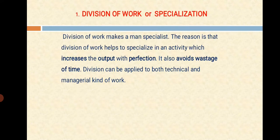The first one is Division of Work or Specialization. Division of Work makes a man specialist. The reason is that division of work helps to specialize in an activity which increases the output with perfection. It also avoids wastage of time. Division can be applied to both technical and managerial kind of work. Henry believed that segregating work in the workforce among the workers will enhance the quality of the product. Similarly, he also concluded that the Division of Work improves the productivity, efficiency, accuracy and speed of the workers. This principle is appropriate for both the managerial as well as technical work level.